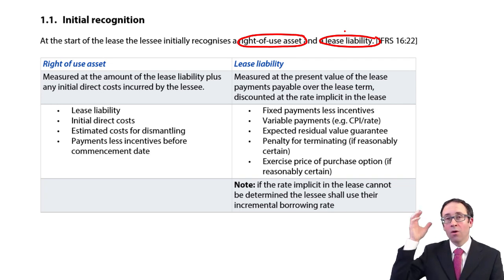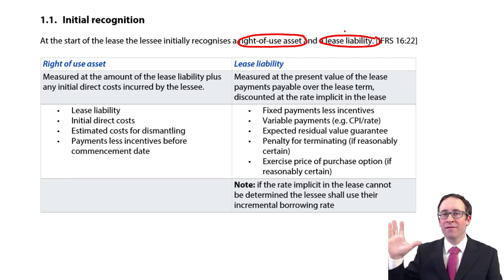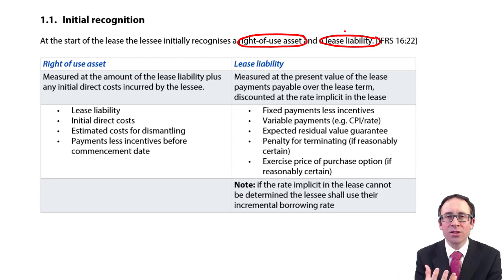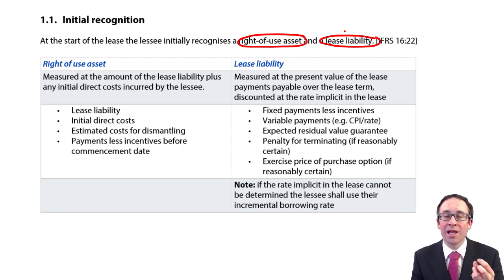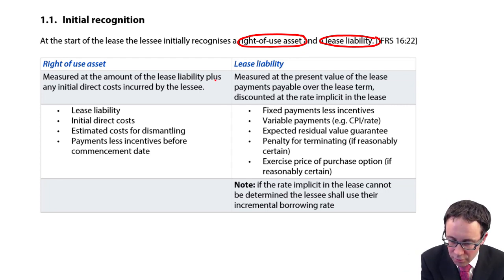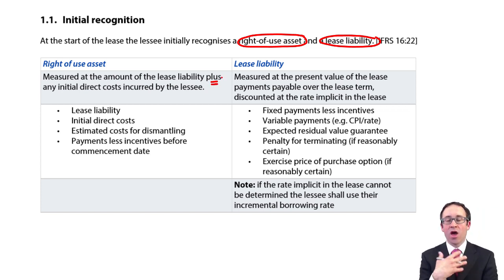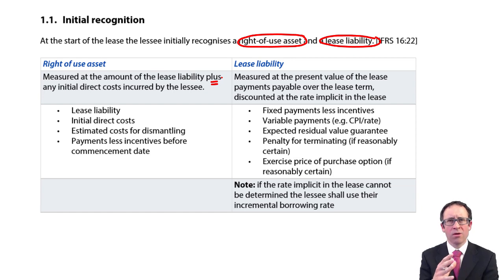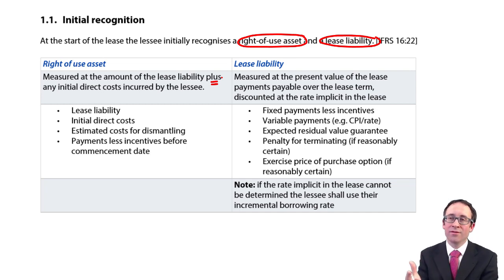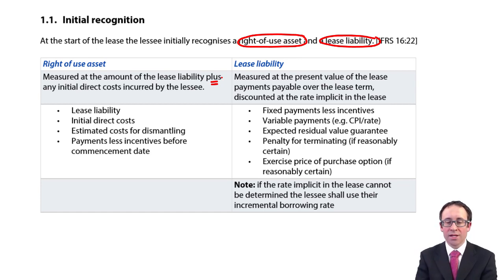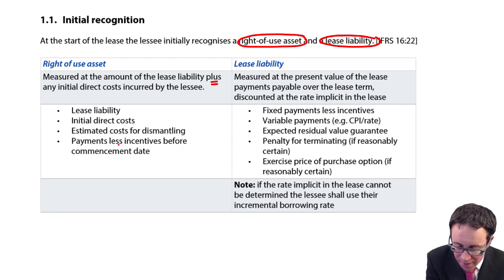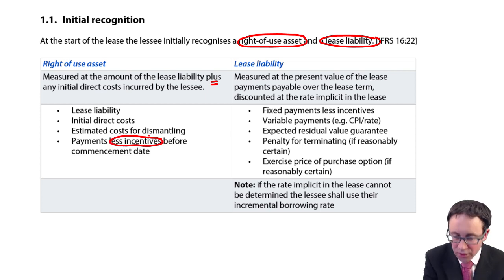Here, I've given you all of the information that is within the standard. At financial reporting level, not all of it is going to be examined — the essentials will be focused upon. In terms of the right of use asset, we look at what the value of the lease liability is, and then add on any additional costs that have been incurred. So there might be some initial direct costs — maybe some sort of arrangement fee that you pay to enter into the lease. If there are any costs of dismantling, like we see in IAS 37, where we have to discount those back to present value and recognise the provision, that is still relevant under IFRS 16 for your right of use asset.